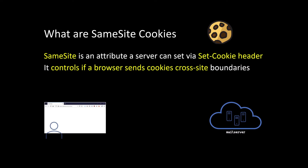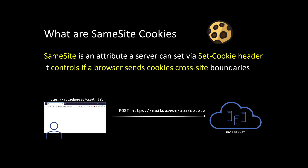As a quick reminder, what is cross-site request forgery? You have a targeted web server on the right — it's called the mail server domain — and then you have a victim who is somehow tricked to visit an attacker-controlled site. In this case, it's the attacker's server, and there's a CSRF payload, csrf.html, that basically performs a POST request to the mail server.